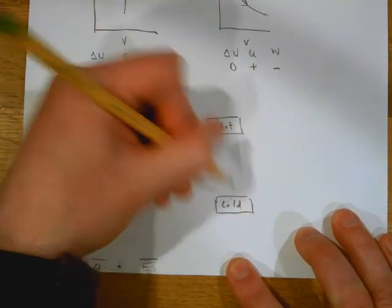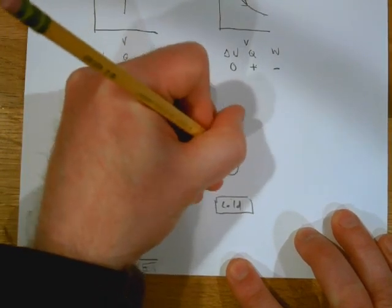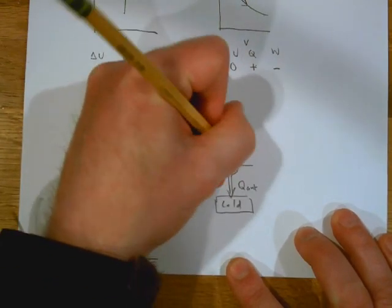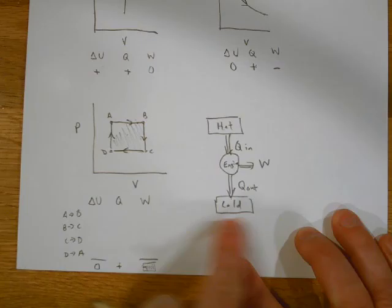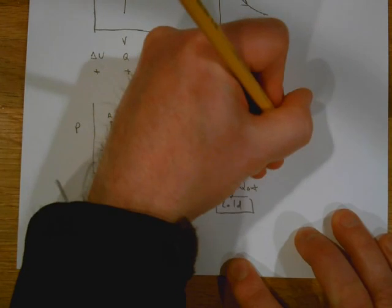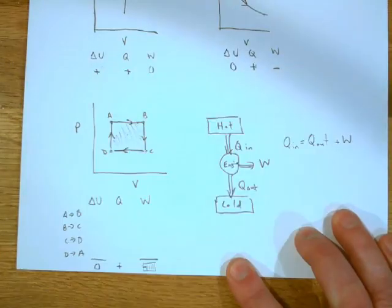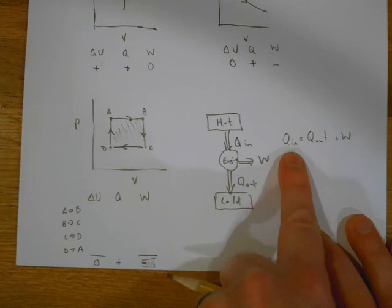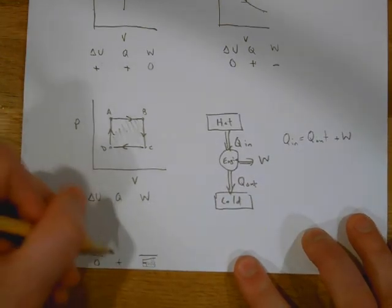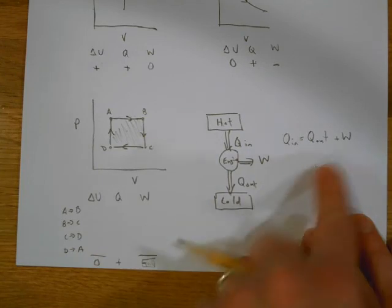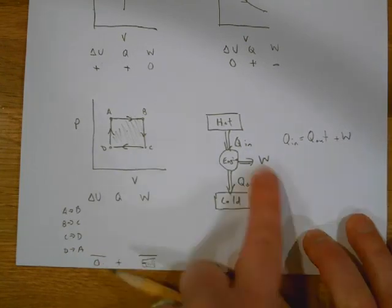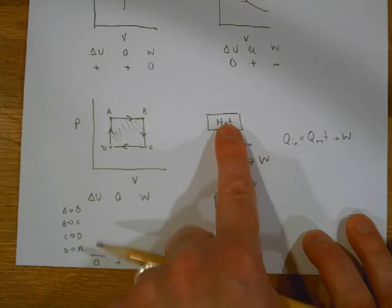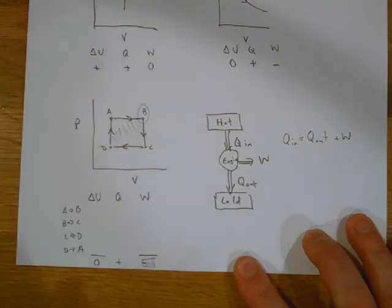Using the hot/cold reservoir engine diagram: heat flows from hot to cold. If you place an engine between them, Q_in flows in from the hot reservoir, Q_out flows to the cold reservoir, and the difference is work: Q_in = Q_out + W. Don't memorize — draw the picture and reason through it. Q_in represents all positive Q values; Q_out represents all negative Q values from your cycle.